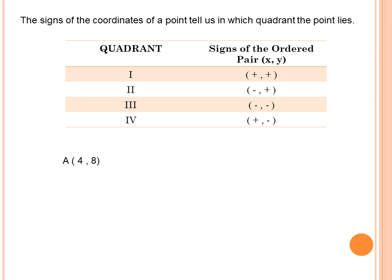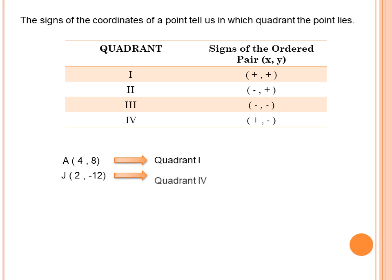Let's try. In which quadrant can we find point A with coordinates (4, 8)? That's quadrant 1. How about point J at (2, negative 12)? If your answer is quadrant 4, you are correct. Now, what if we have point E at (6, 0)? It is not located in any of the four quadrants because it is located on the x-axis — specifically the positive x-axis.